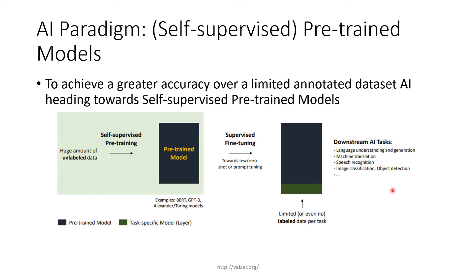We then perform the downstream AI tasks. This can range from language understanding and generation, machine translation, speech recognition, image classification, and object detection.